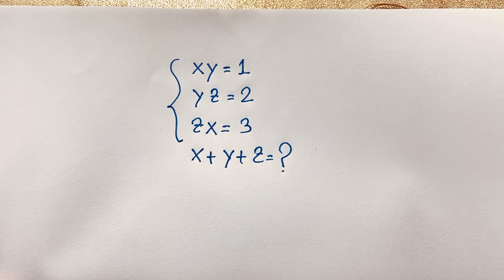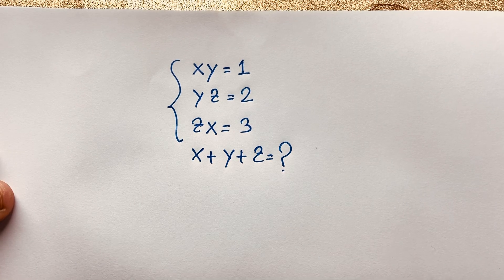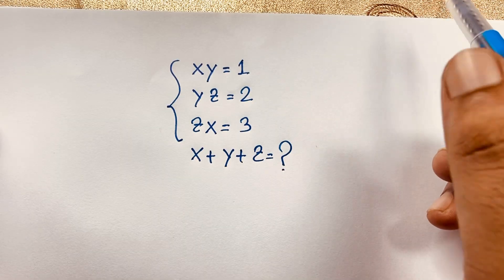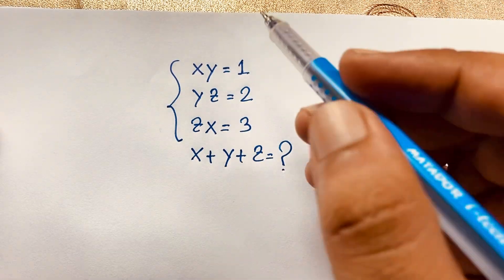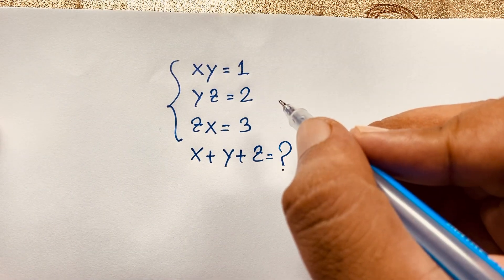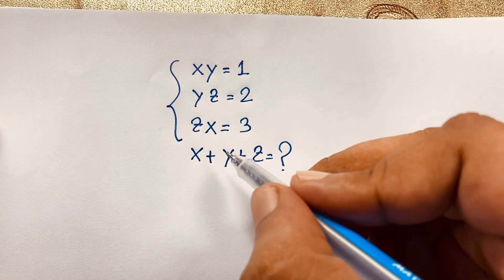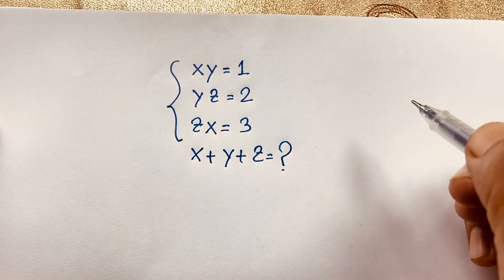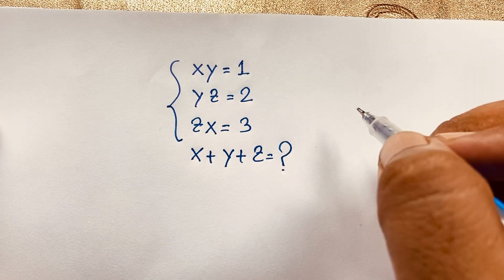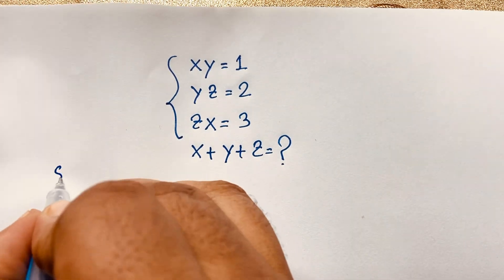Hello everyone, welcome to Raster's Classroom. Today we have solved an interesting viral Math Olympiad question: xy=1, yz=2, zx=3. Find x plus y plus z. How to simplify this interesting Math Olympiad question?